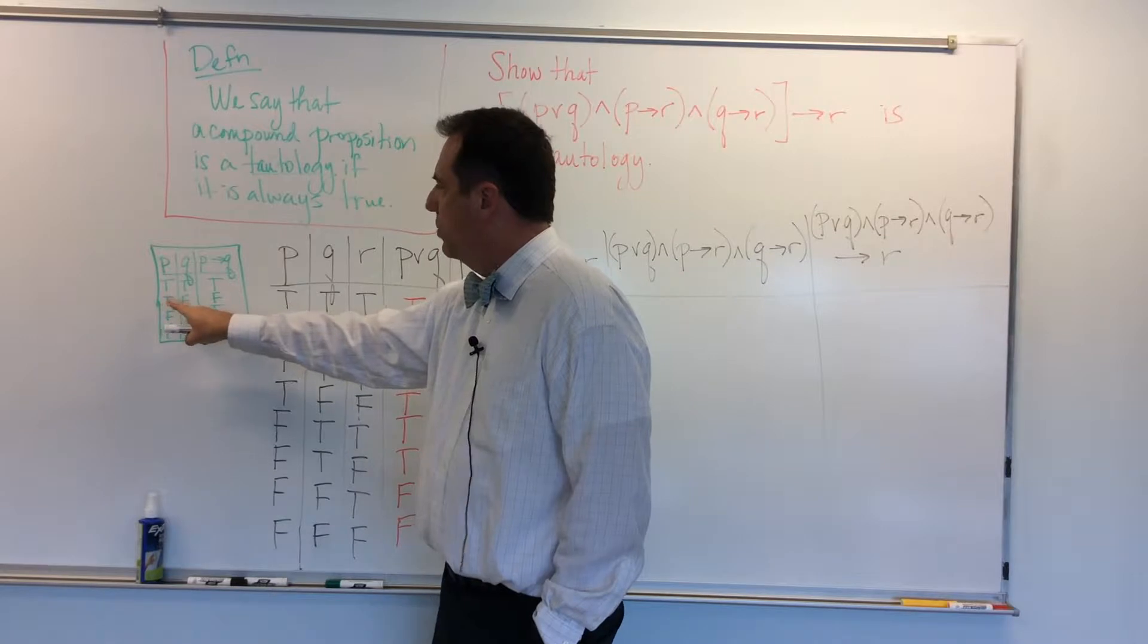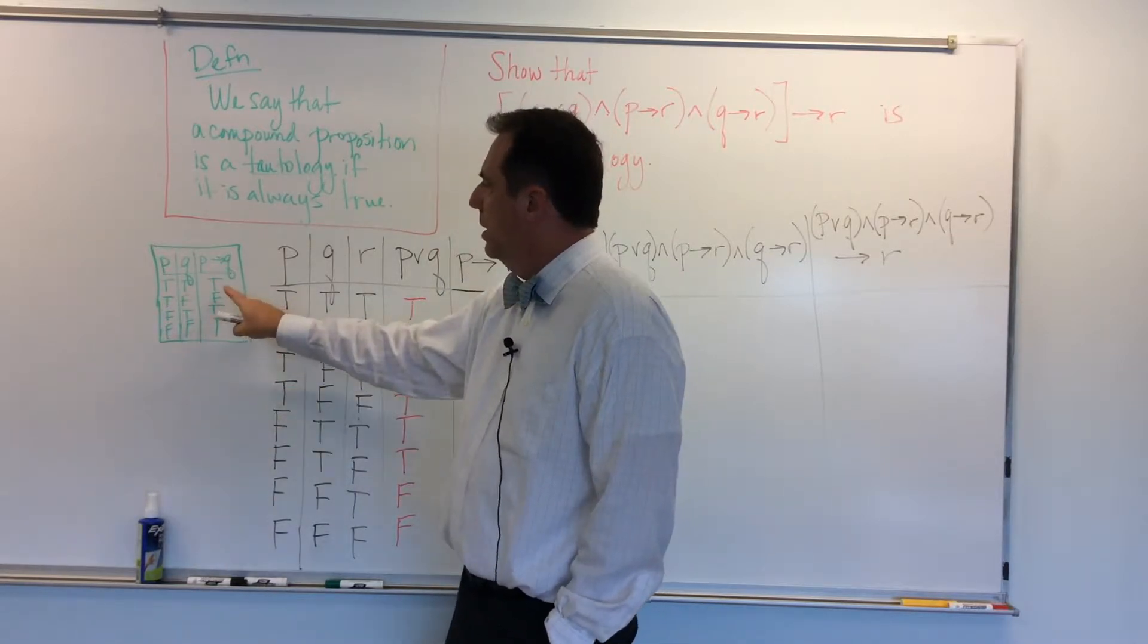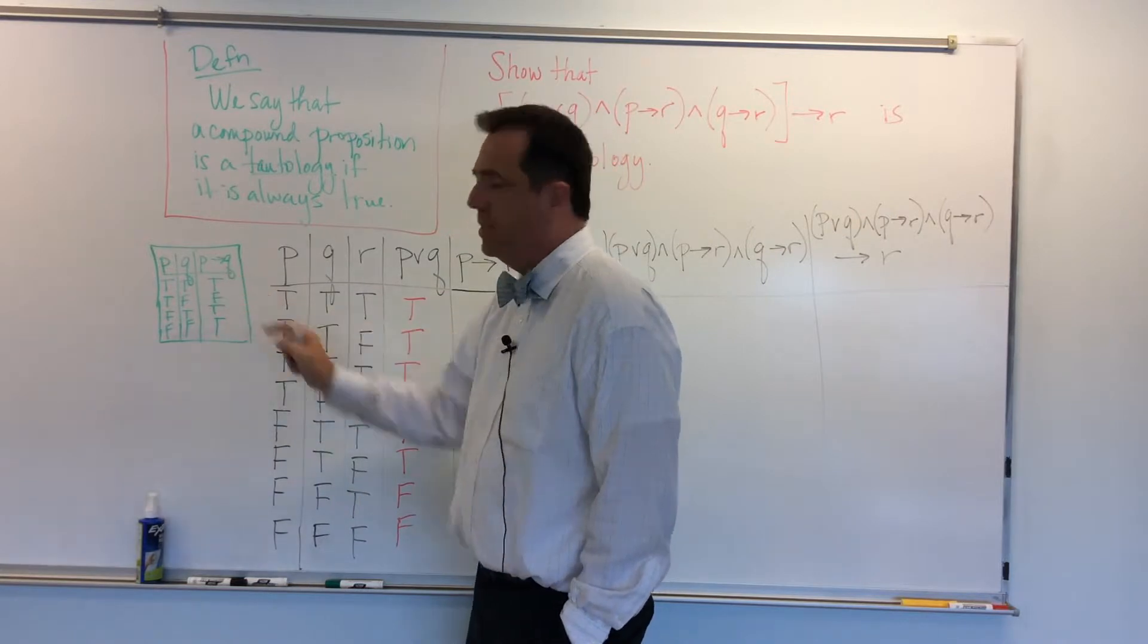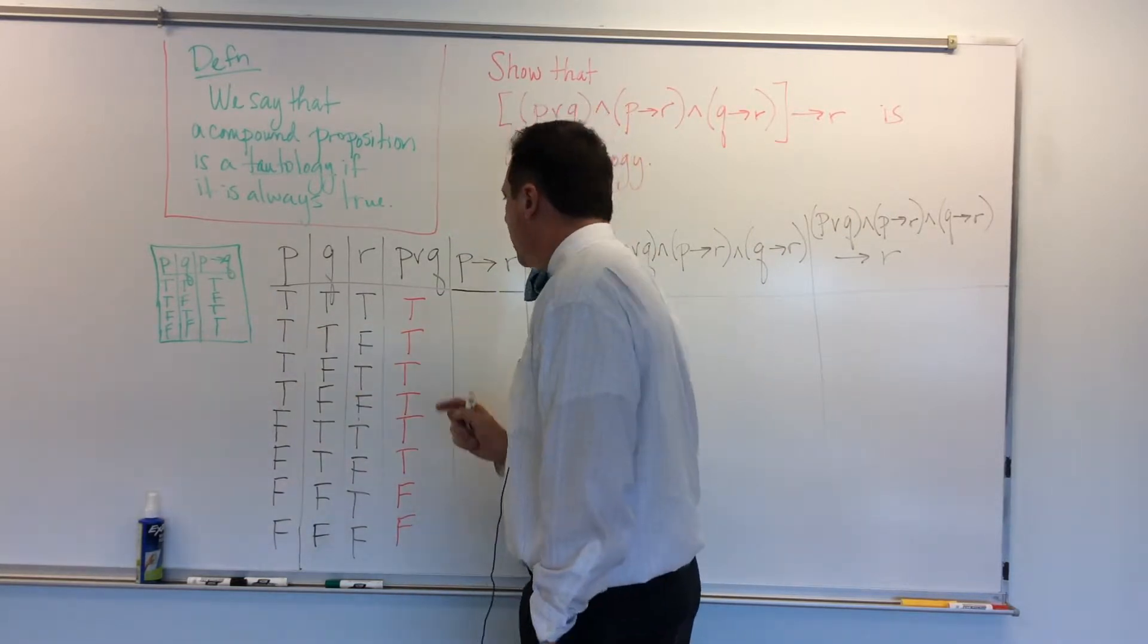is when the hypothesis is true and the conclusion is false. In this case, when P is true and Q is false, that's the only time I have if P, then Q is false. The rest of the time, that's true.